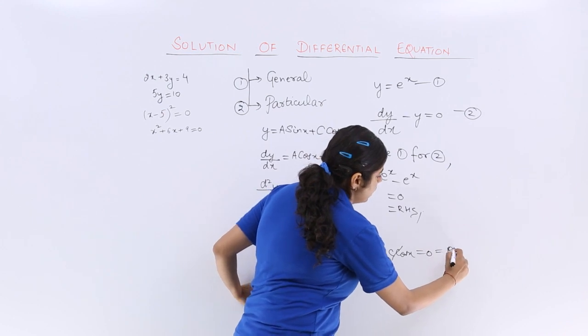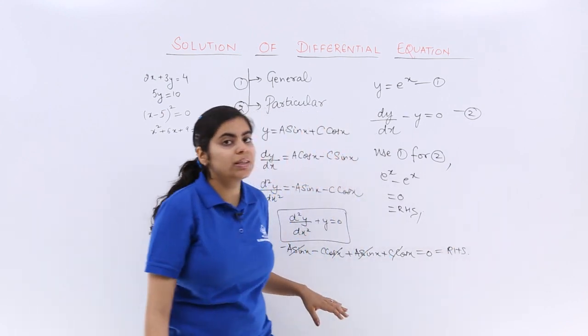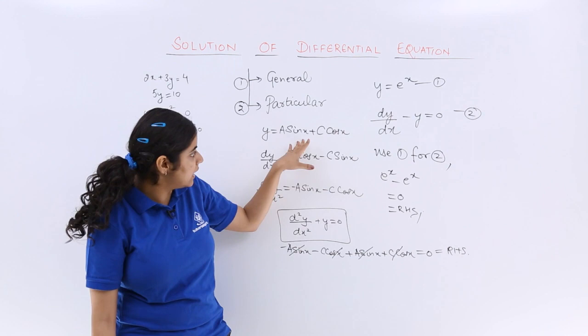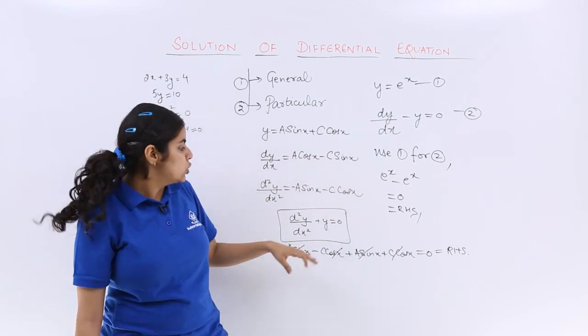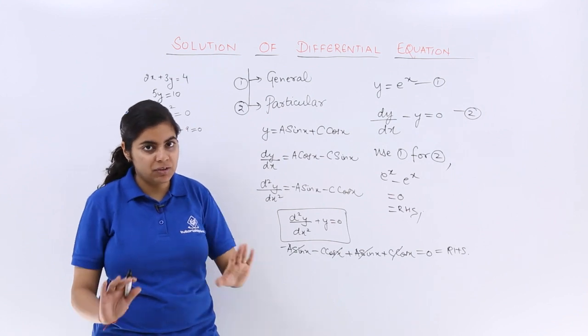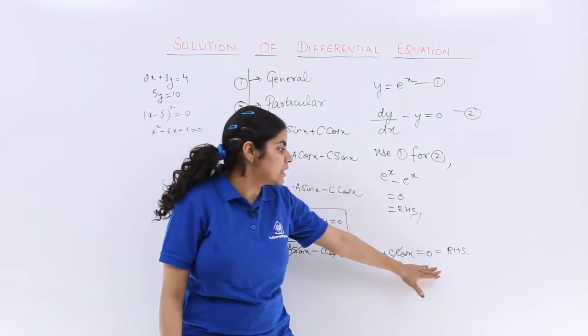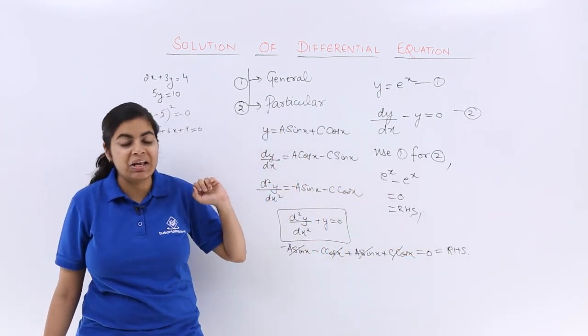So what do we know? We know that definitely a sin x plus c cos x is the solution to this given differential equation, because it gave me left hand side equal to the right hand side.